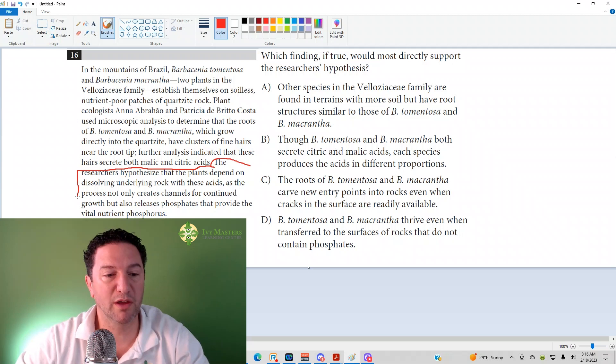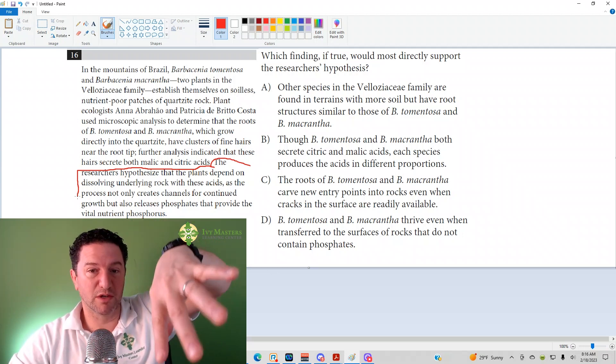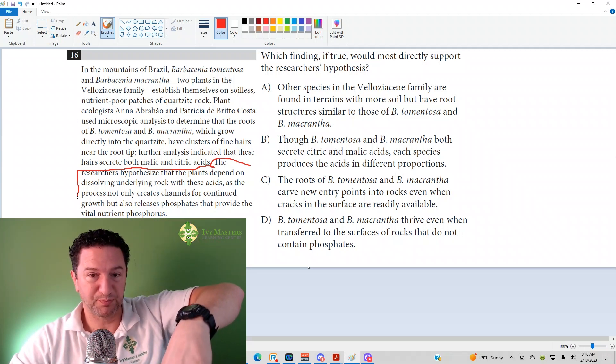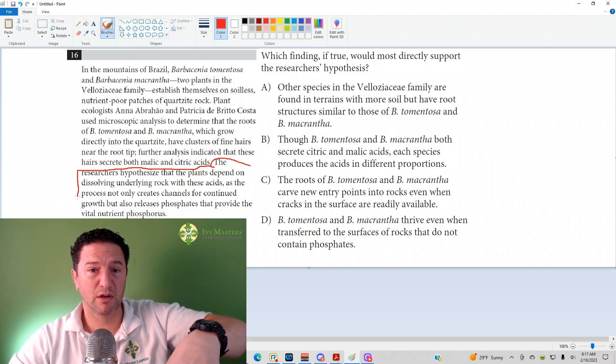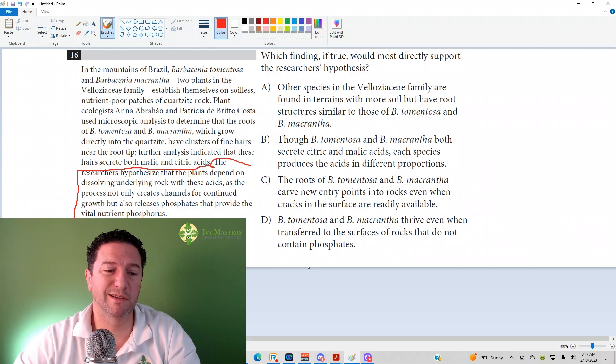So it creates the channels for the continued growth, but it also releases phosphates that provide the vital nutrients, phosphorus. So once it secretes those, it makes a little tunnel for itself, but it's also going to turn that rock into phosphorus, which sounds like it's going to be nutrients, food for the plant.